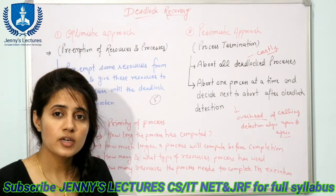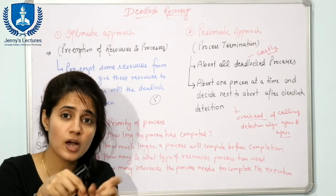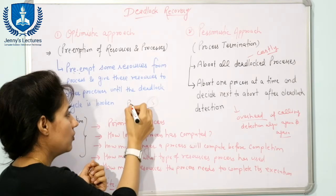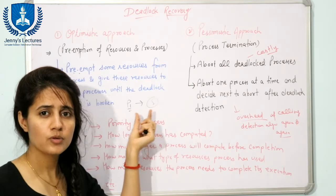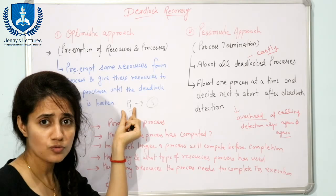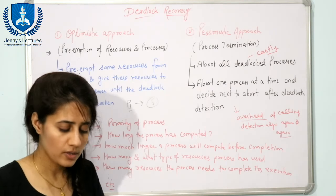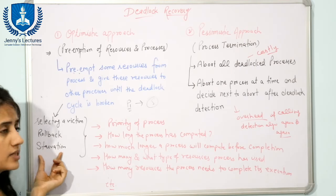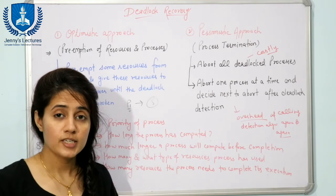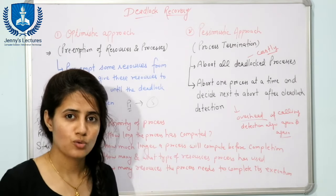For example, set a limit such that the number of rollbacks for a process cannot exceed five. If process P1 has already been rolled back five times, then on the sixth occasion the system cannot select P1 as a victim and must choose a different process. Including the rollback count in cost factors helps avoid starvation. These are the two types of recovery approaches — optimistic and pessimistic — which concludes the topic of deadlock.